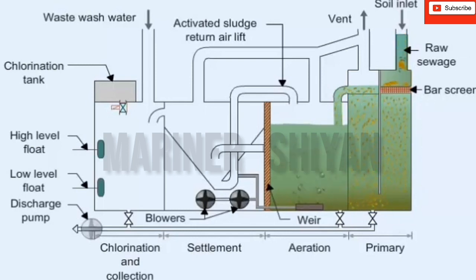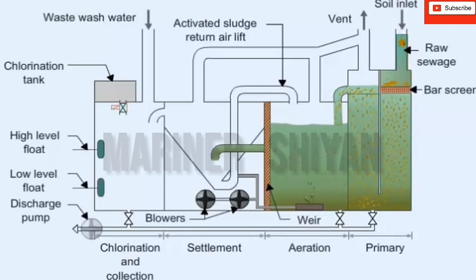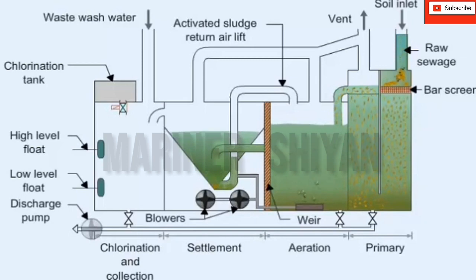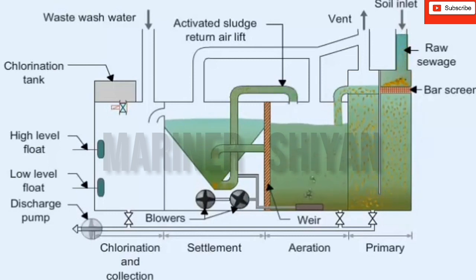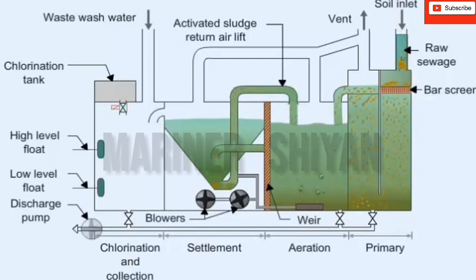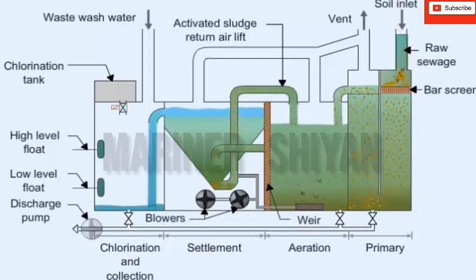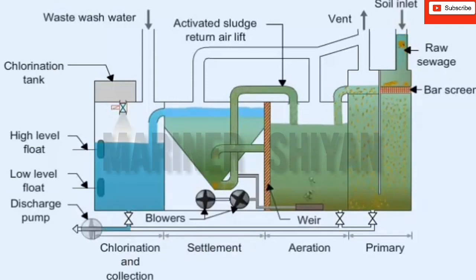After prolonged aeration, the mixed liquor is displaced into the settlement tank where the biological floc is formed. Activated sludge gravitates to the bottom and is continuously withdrawn and returned to the aeration chamber to mix with incoming waste. In the unit shown, the sludge is returned to the aeration compartment by an airlift. Clean effluent from the top of the settling tank is collected in the last compartment for disinfection and discharge overboard.